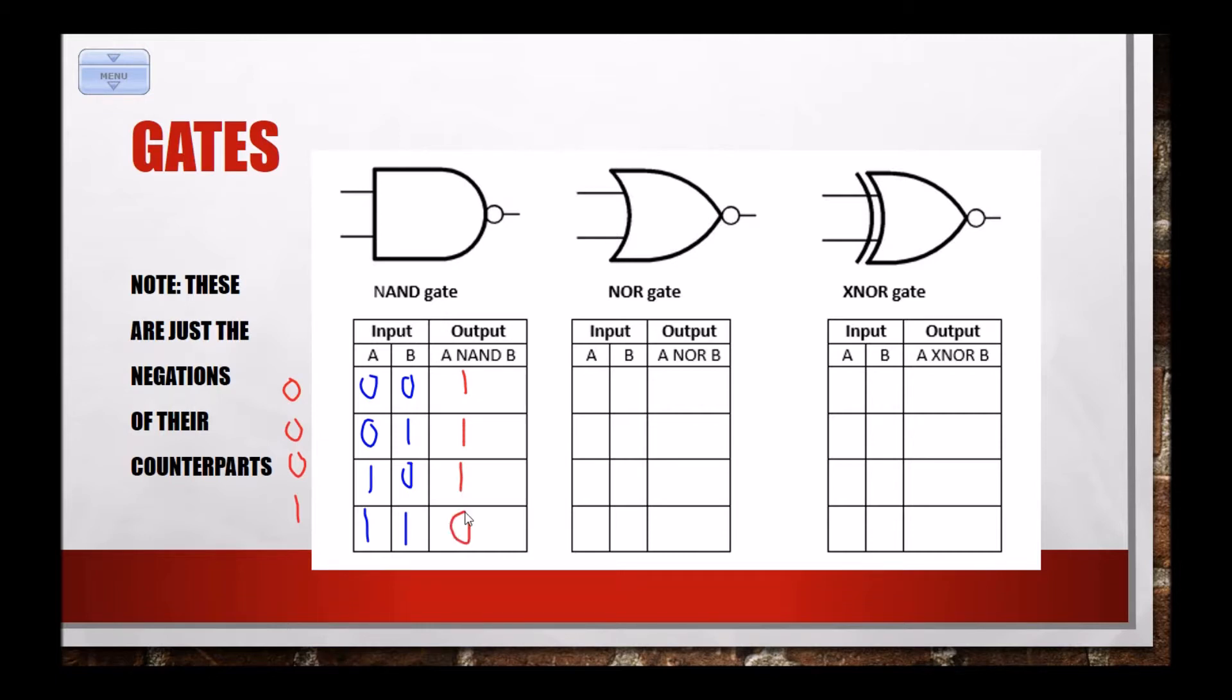Similarly, for our NOR gate, our NOR gate is going to be the opposite of the OR gate, so it is NOT OR. So remember, OR was 0, 1, 1, 1, so NOR is 1, 0, 0, 0. And to read through the NOR gate there, 0 NOR 0 is 1, 0 NOR 1 is 0, 1 NOR 0 is 0, and 1 NOR 1 is 0.